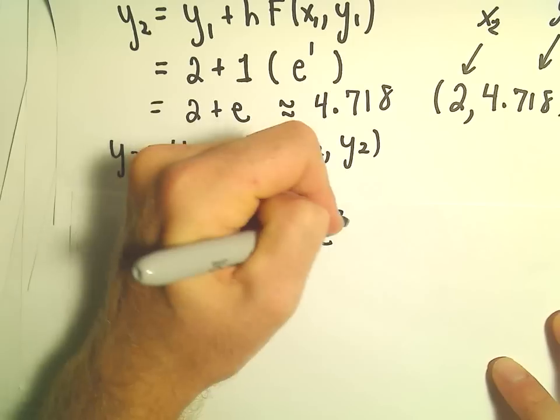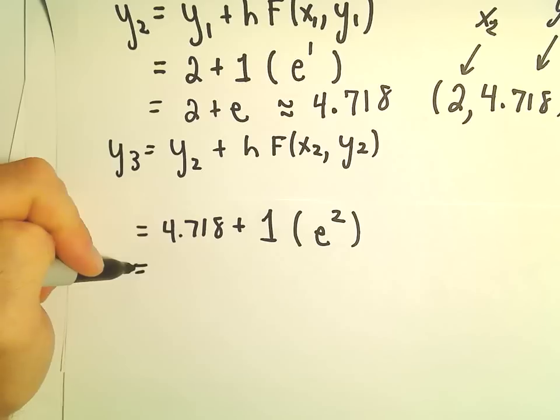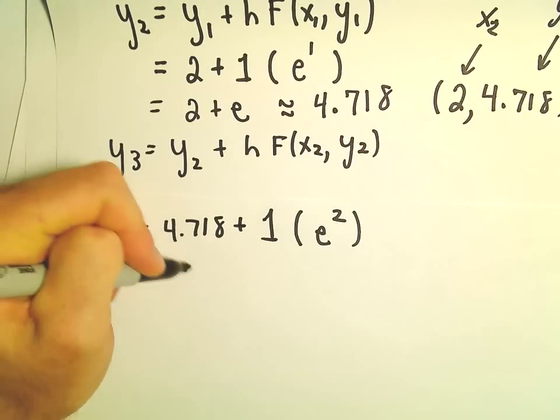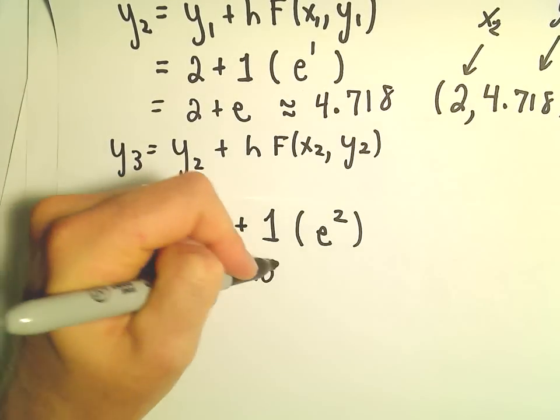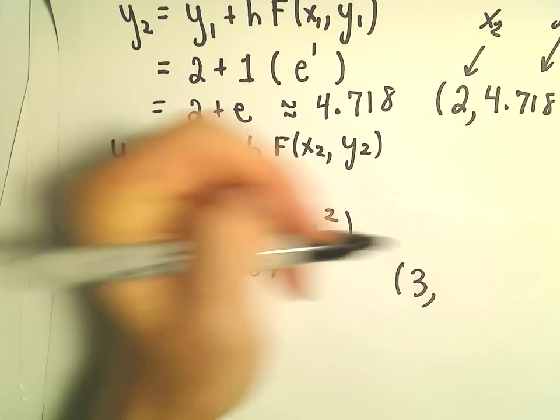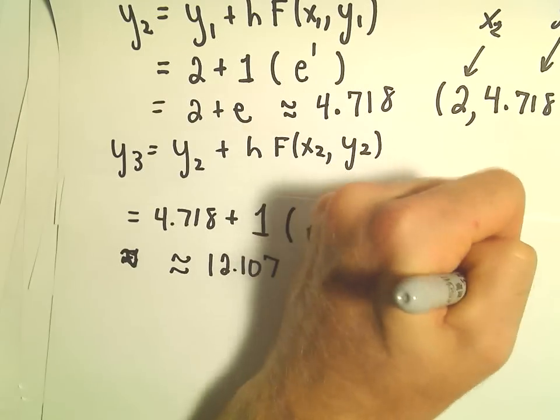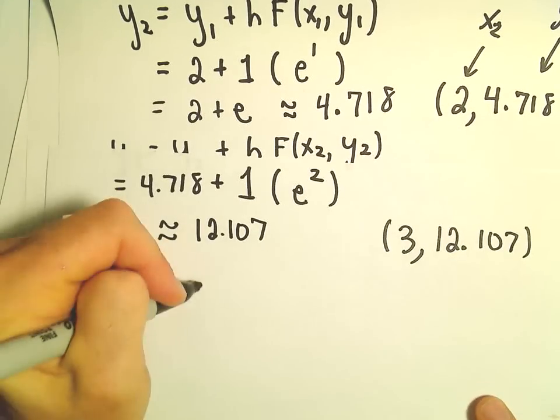And now we'll have e raised to the second power. Well, let's see, one more time here. Alright, I'm getting this to be roughly equal to 12.107. And that's now going to be our approximation. So it says at the x-coordinate of 3, we're approximately getting 12.107.